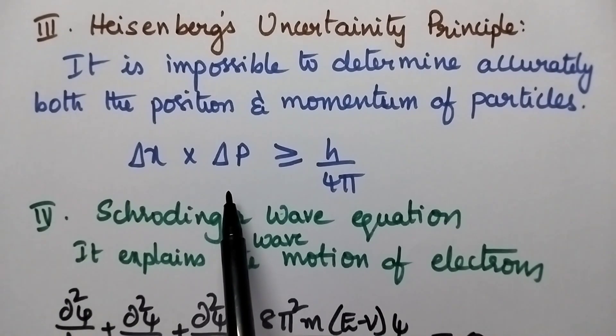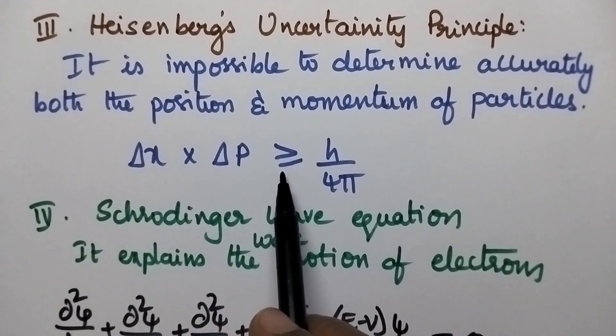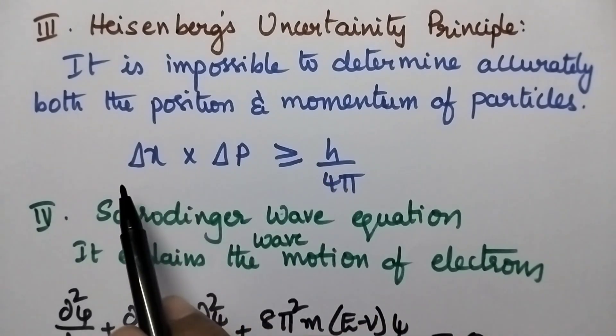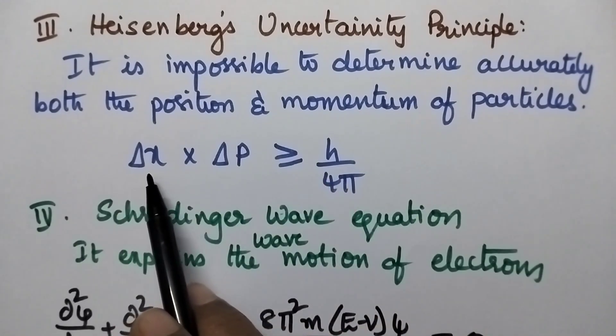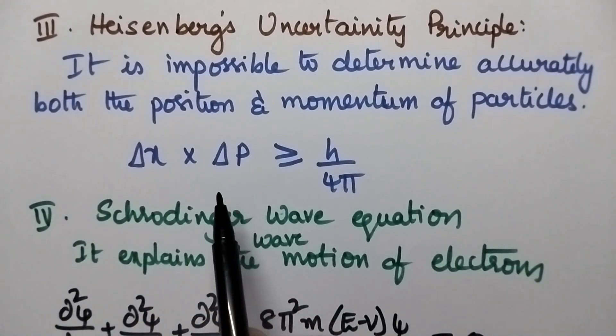Mathematically it can be expressed as delta x times delta p is greater than or equal to h by 4 pi. Delta x means uncertainty in position, delta p means uncertainty in momentum.